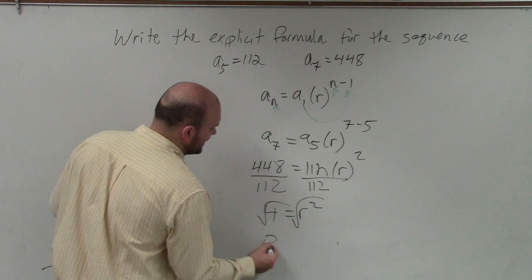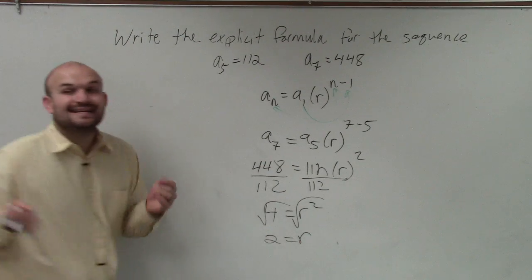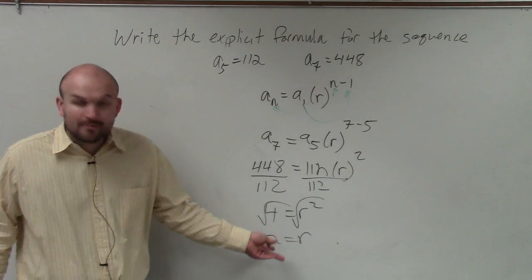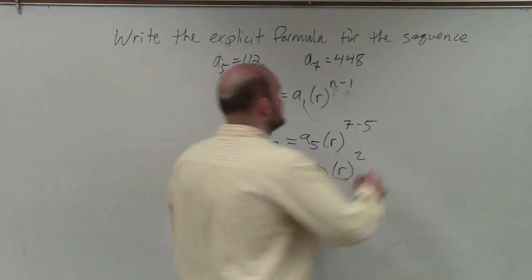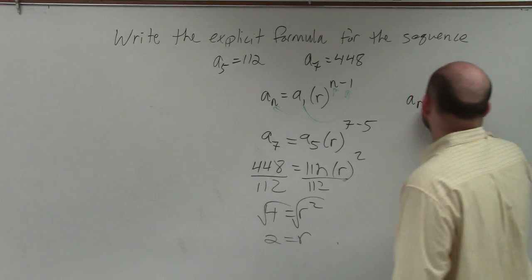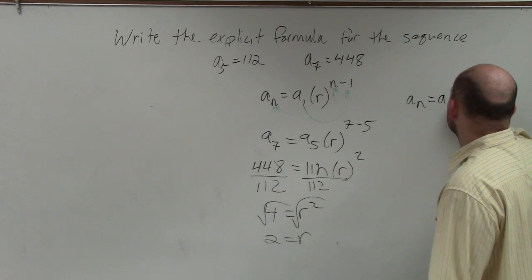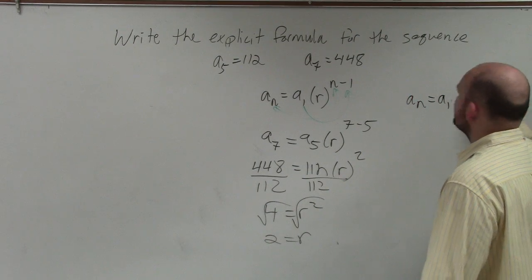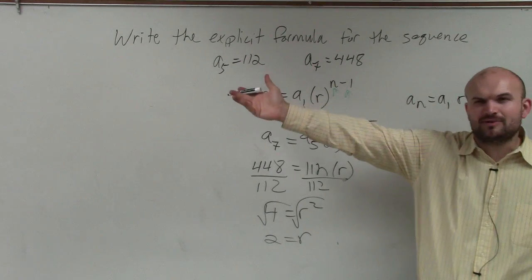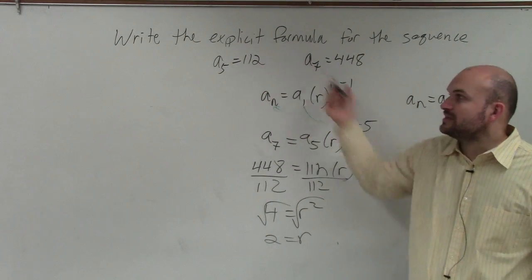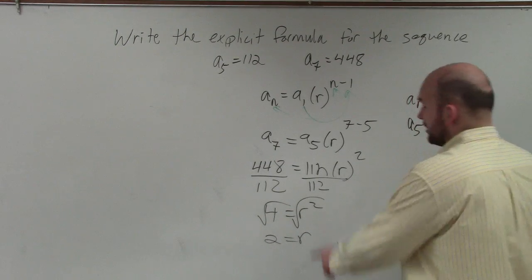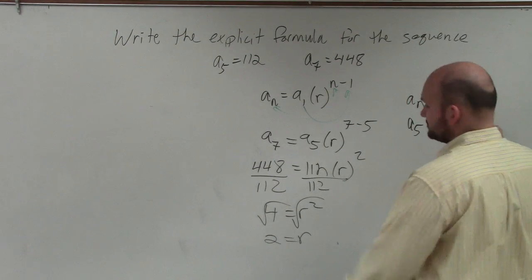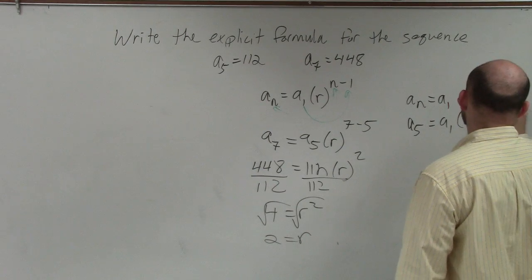Take the square root, I get 2 equals r. Now I know what my ratio is. So now that I know my ratio, I'm going to go back to my explicit format, and I'm going to choose any number—usually you want to pick the ones with the smallest numbers. So let's put a_5 equals a_1, which we don't know yet, times our ratio, which is now 2, to the 5 minus 1.